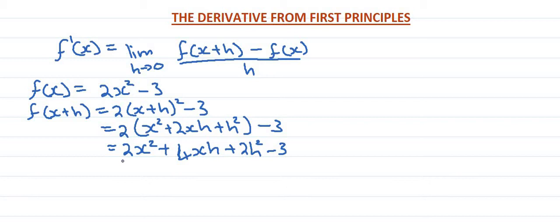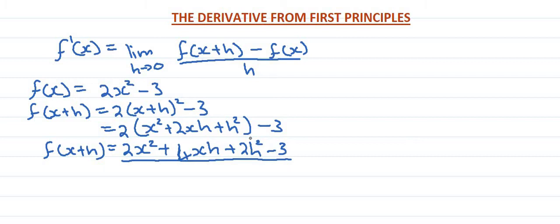So we expand here. We can find f of x plus h. So we have the formulaic: 2x squared plus 4xh plus 2h squared minus 3. That is f of x plus h.